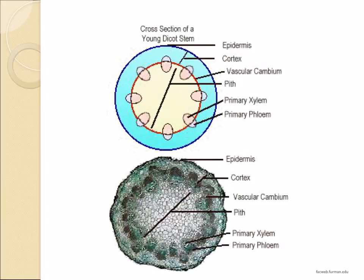Remember that when you draw a plan diagram, there is no need to show the individual cells. You just need to draw and annotate the areas of the tissue. Remember to also follow the shape of the different tissues and don't make your drawing too textbook-like.